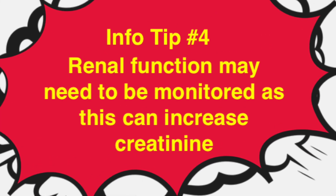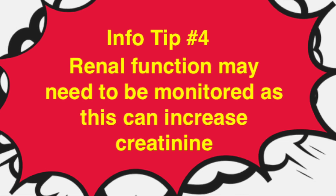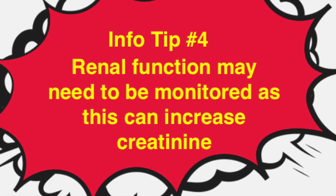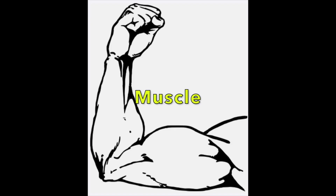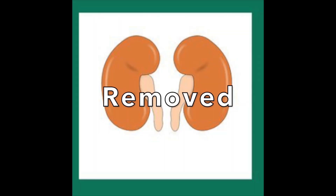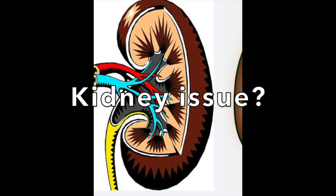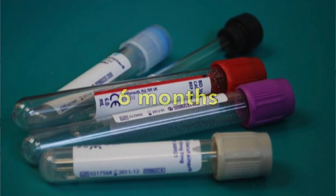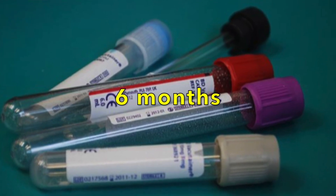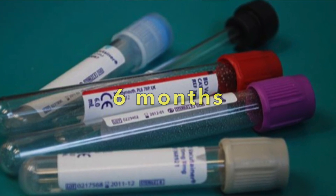Info tip number four: renal function needs to be monitored regularly, as this medication can cause an increase in creatinine. Creatinine is a chemical waste product from the normal muscle breakdown in our body; it is removed and filtered through the kidneys, so when the creatinine level is high it can indicate there may be an issue with the kidneys. Generally it's a good idea to draw a chemistry panel every six months to monitor kidney function, though it may need to be monitored more often depending on the patient, their symptoms, and previous labs.